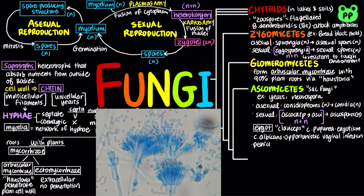A group of ascomycetes known as Penicillium produces penicillin, which serves as an antibiotic as it inhibits bacterial peptidoglycan cell wall synthesis.